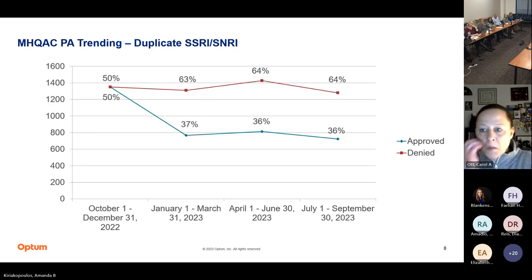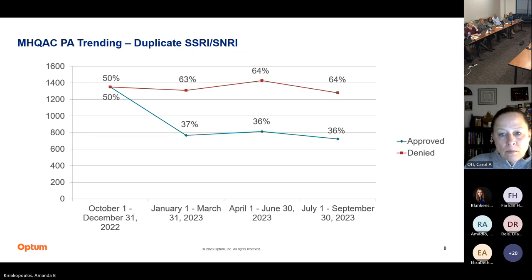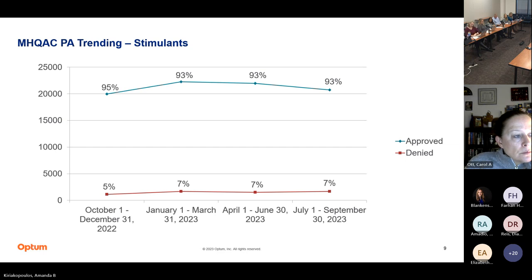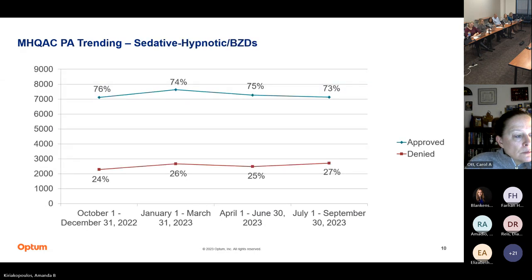For the duplicate SSRI/SNRI, fairly steady with a little bit of a decrease in this time period. In the stimulants, also fairly steady — we see a decrease starting in June when people are out of school, and then it picks up again when they go back to school. For the sedative hypnotic benzodiazepines, also fairly steady with where we've been lately.